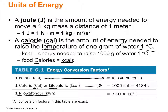The kilowatt-hour is how we measure electricity usage — for example, light bulbs. One kilowatt-hour equals 3.6 times 10 to the 6 joules. All conversion factors on this table are exact. Electricity costs 8 to 15 cents per kilowatt-hour, and electricity costs can build up very quickly.